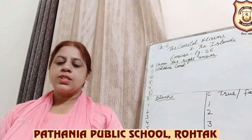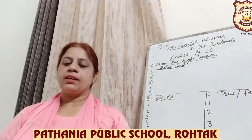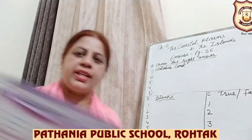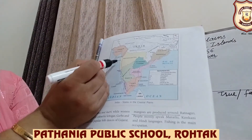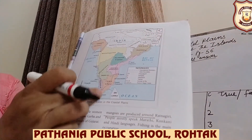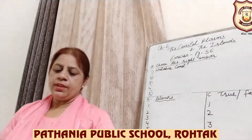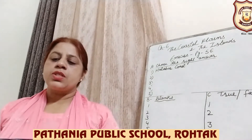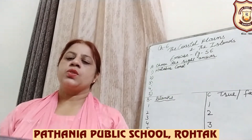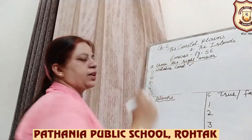Number 1 — Choose the right answer and put a tick. The part of western coastal plains that lies in the south is: Northern Sarkars, Coromandel coast, Malabar coast, or Konkan coast. The answer is Malabar coast — the southern part of western coastal plains. So you have to put a tick on Malabar coast.